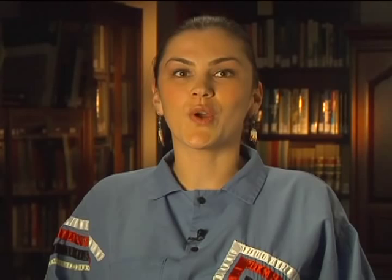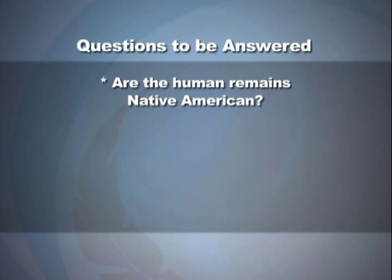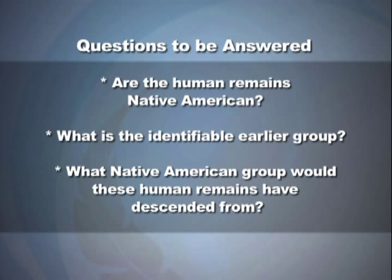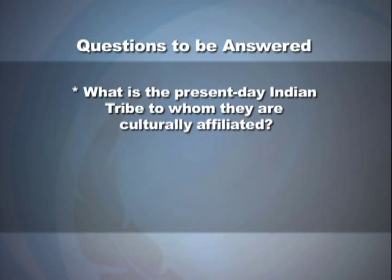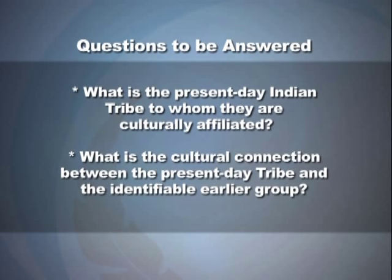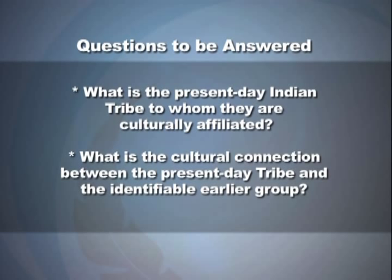There are some basic questions you need to answer when going through the inventory process, which are subsequently used to write a notice of inventory completion: Are the human remains Native American? What is the identifiable earlier group? What Native American group would these human remains have descended from? What is the present-day Indian tribe to whom they are culturally affiliated? What is the cultural connection between the present-day tribe and the identifiable earlier group? How did you make this determination, which tribes did you consult with, and what evidence did you use?